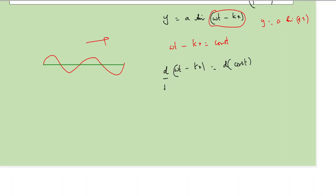If you look at this, we get d by dt of omega t minus d by dt of k into x is equal to zero.